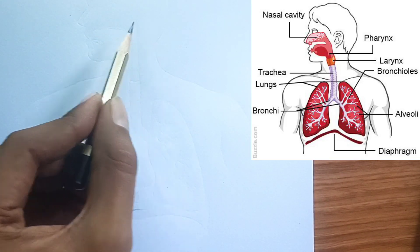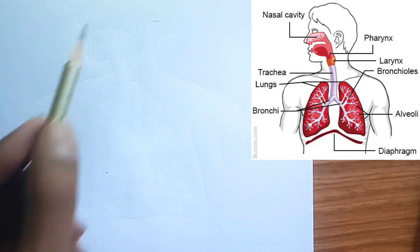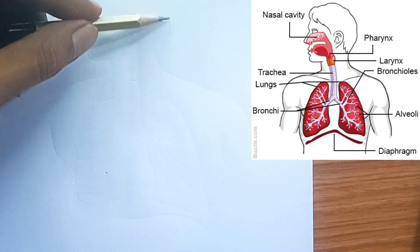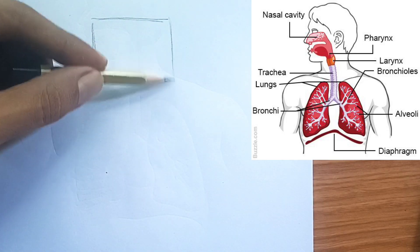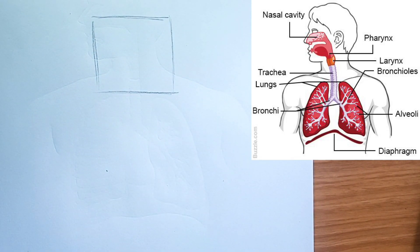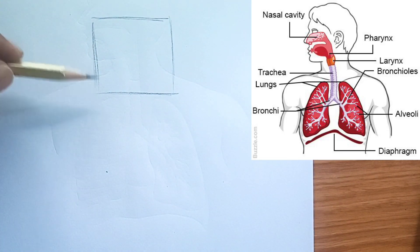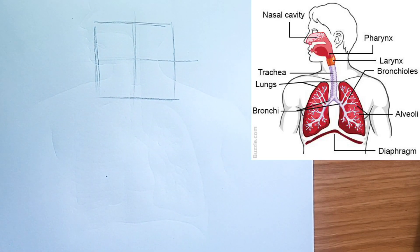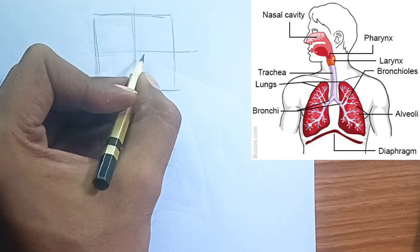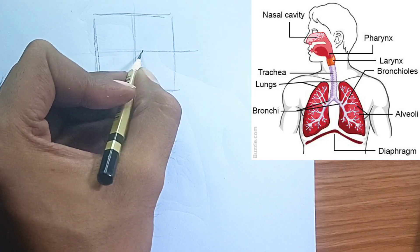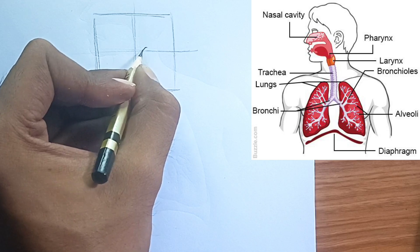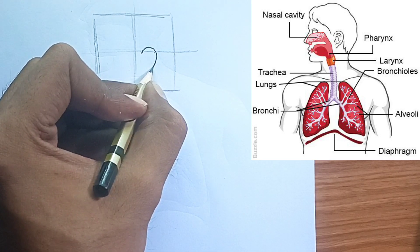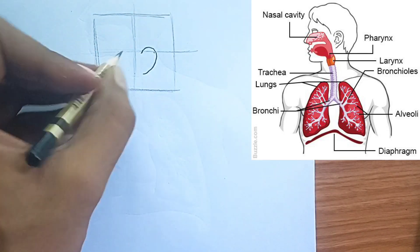In this video, I will be drawing the diagram of human respiratory system, so follow me along the video to draw this diagram easily. Let's take a breath and explore the human respiratory system. Imagine a network of tubes and sacks designed to bring life-giving oxygen into your body and whisk away carbon dioxide, a waste product. It's a continuous exchange that's essential for our survival.